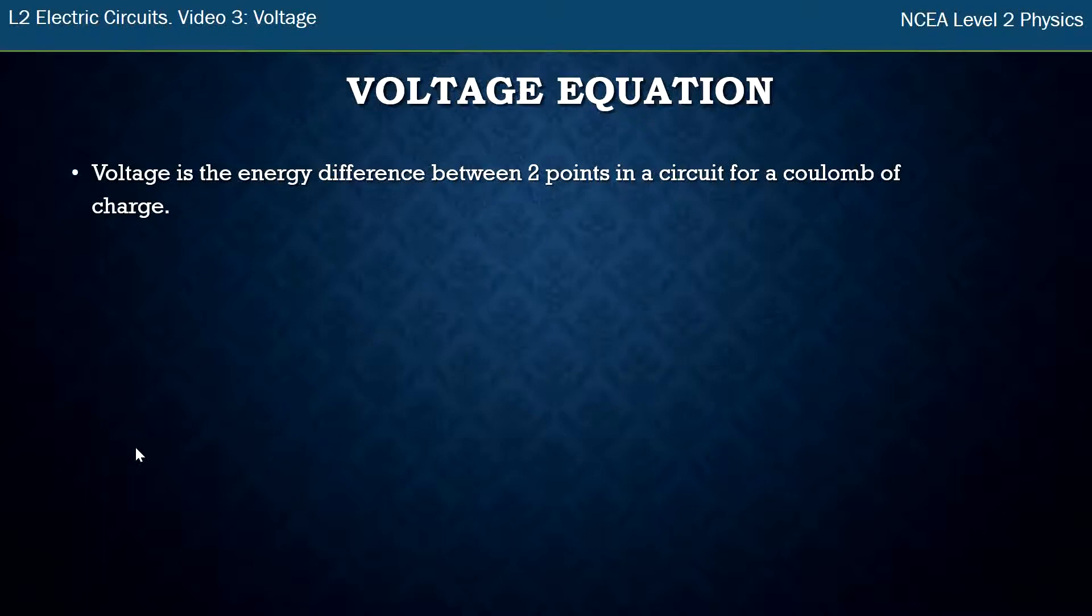The last thing I want to introduce you to is an equation. This equation for voltage is effectively the definition. Remember our definition is the energy difference between two points in a circuit for a coulomb of charge. Written as an equation looks like this. V is voltage, E is the energy between two points, per, because that's what divided by is, group of electrons, a coulomb. So that comes up very seldomly, but it helps you to remember what the definition of voltage is. It's energy per group of electrons.